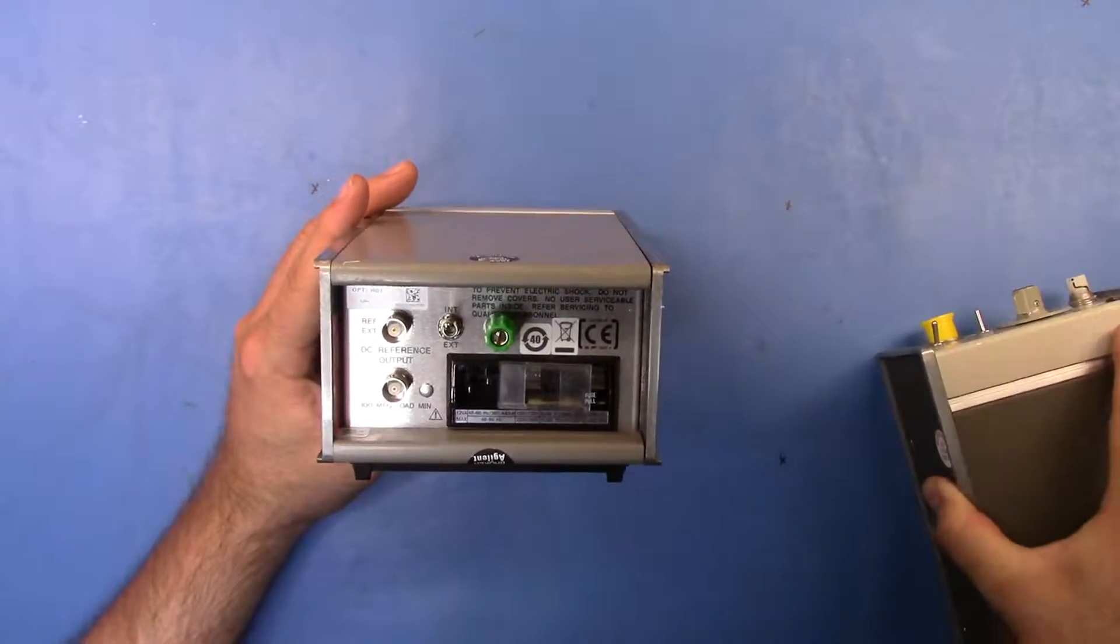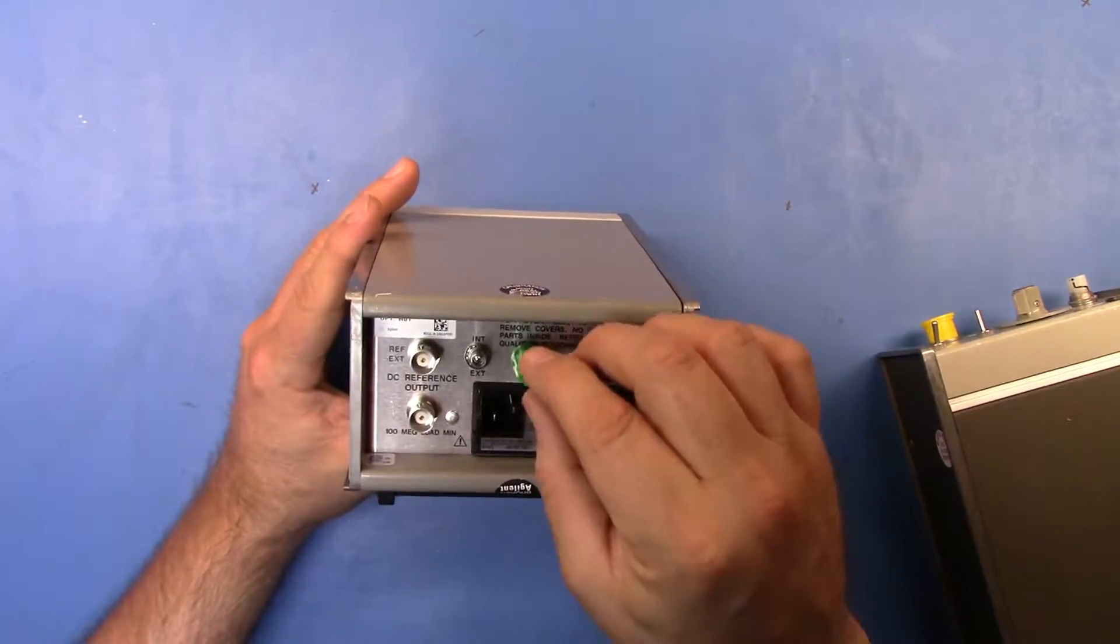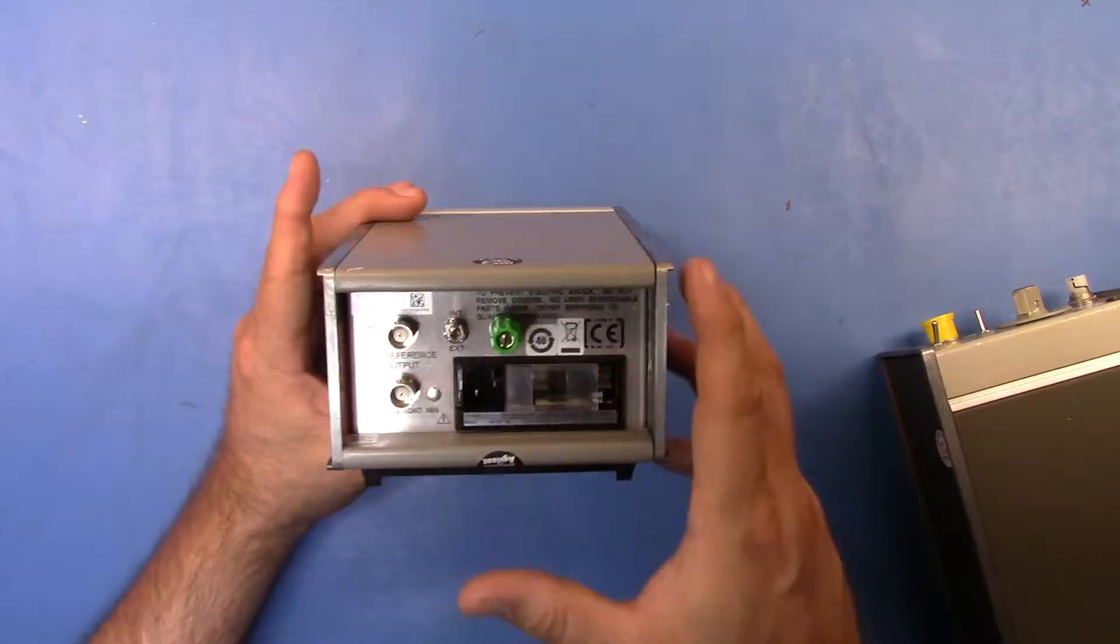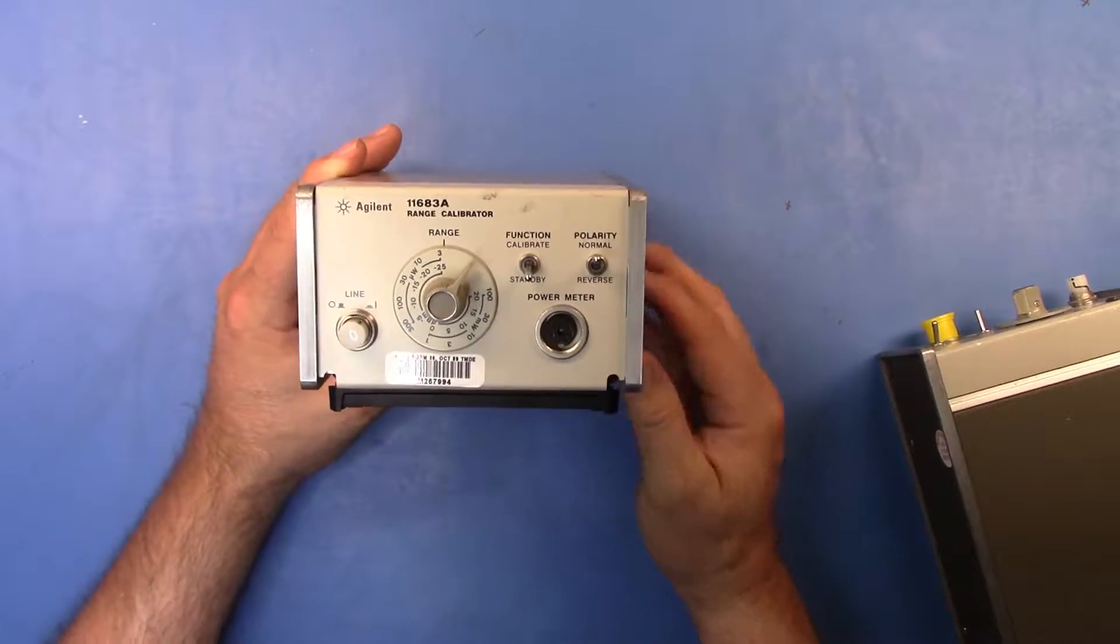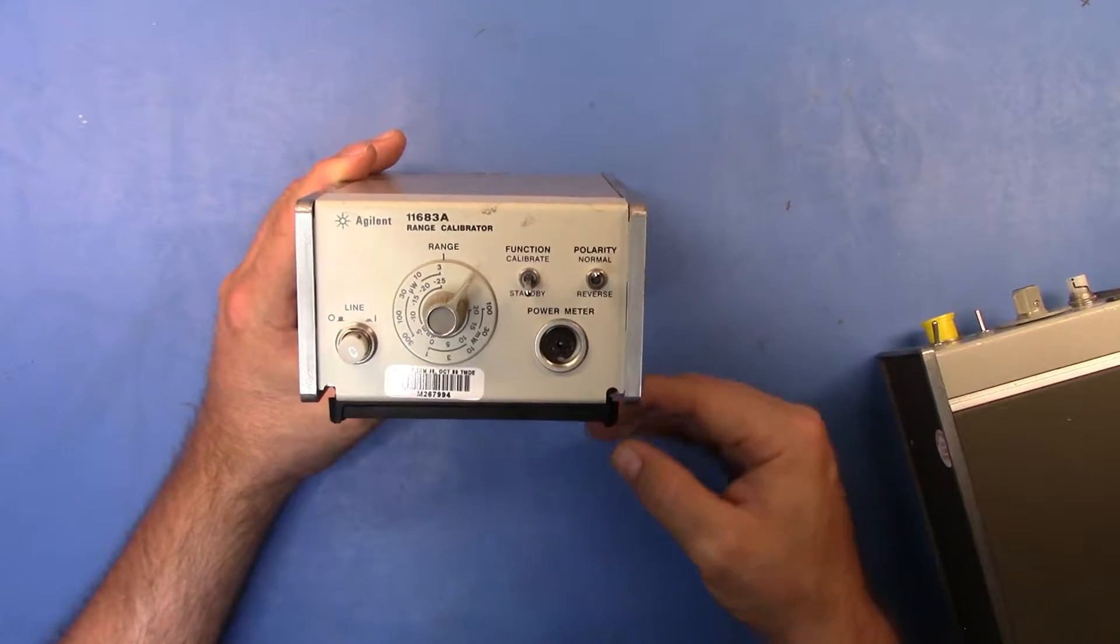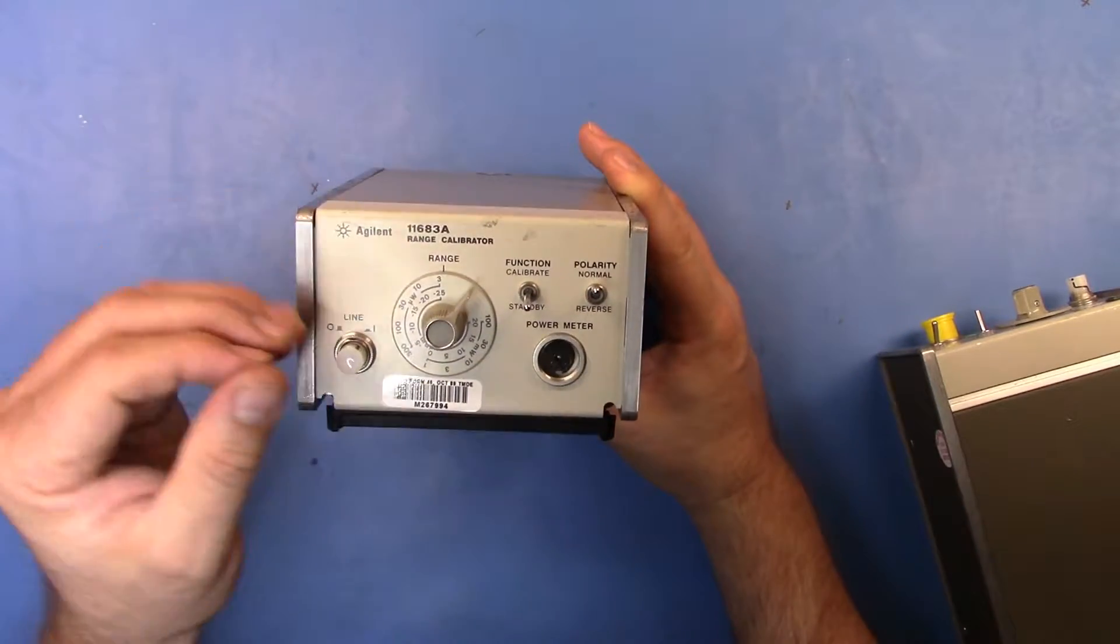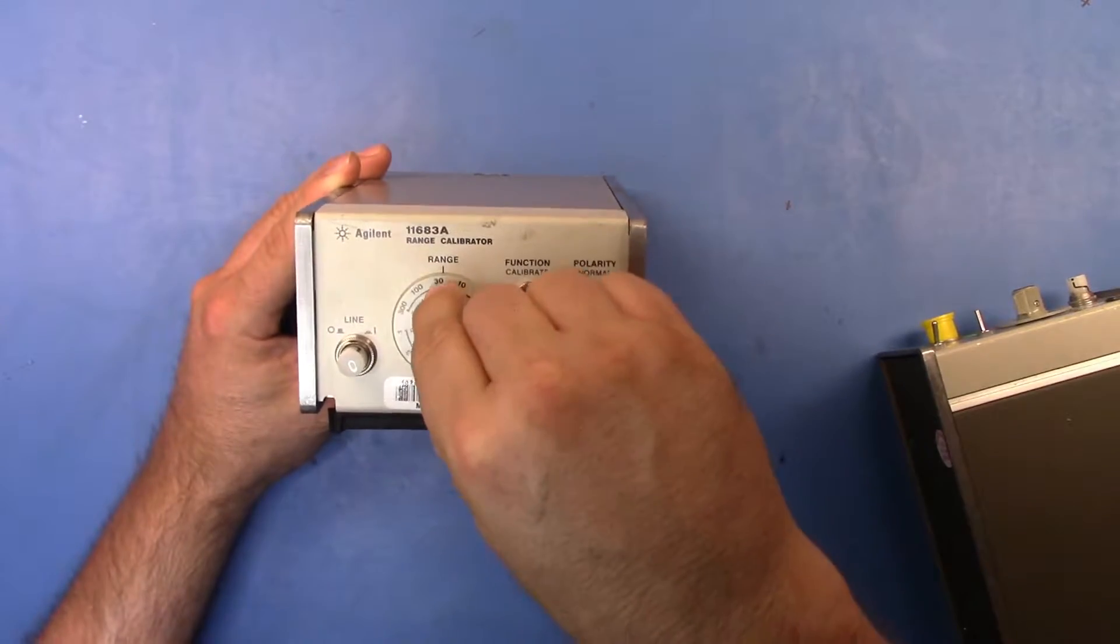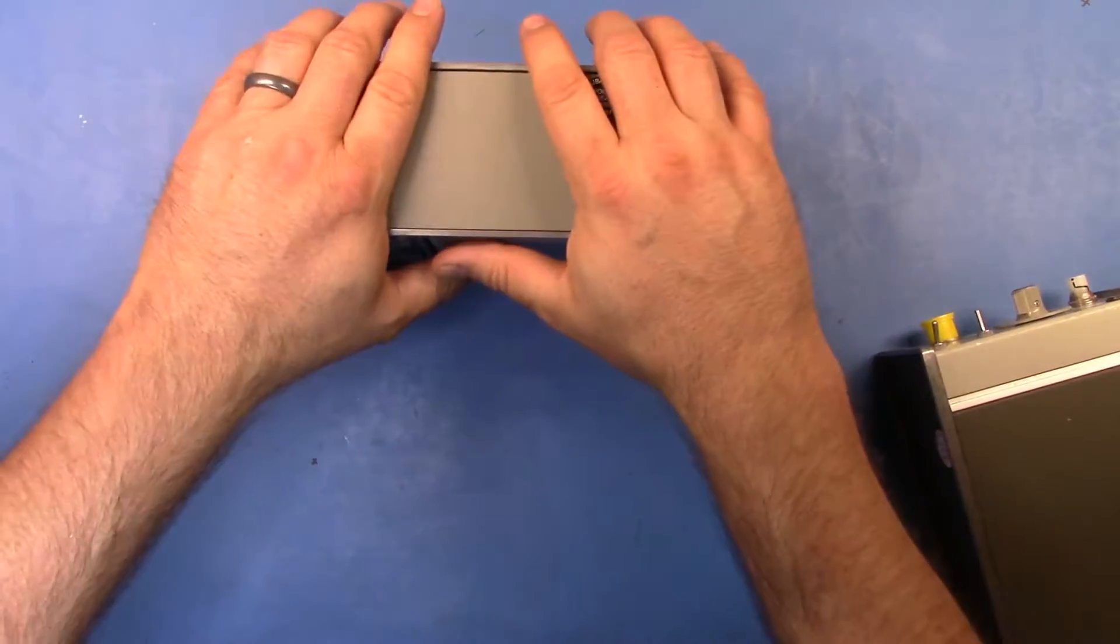What that option is, is it gives me the ability to put an external reference into this. How this thing works basically is that there is an accurate internal voltage reference that's set to 145 millivolts plus or minus 2 millivolts, and then it utilizes a voltage divider to create the individual voltages for each of the ranges that you see here on the front.